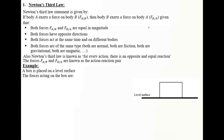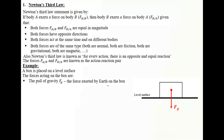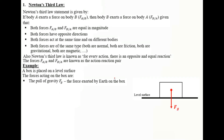A box is placed on a level surface. The forces acting on the box, if the box is our system, are given by the pull of gravity, which is the force exerted by Earth on the box, and the normal push F_N, which is the force exerted by the level surface on the box. Both forces should be equal in magnitude, opposite in direction, acting at the same time on different bodies, and of the same type.